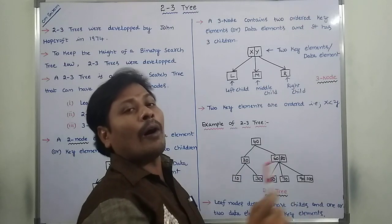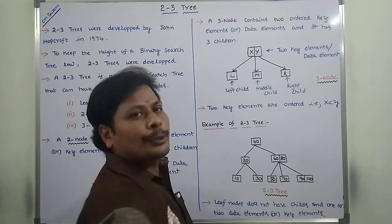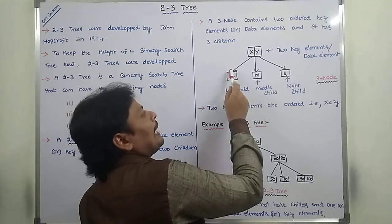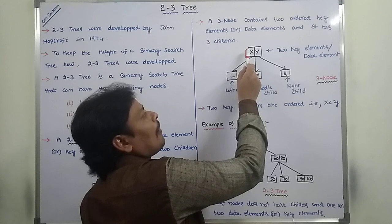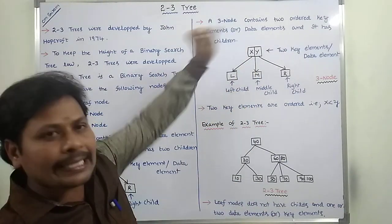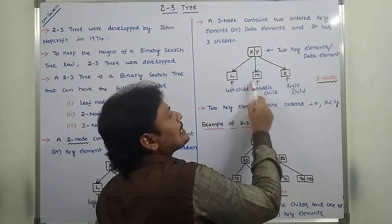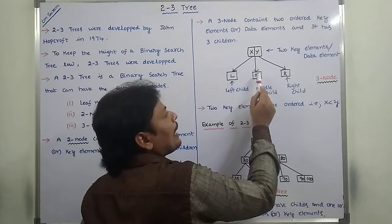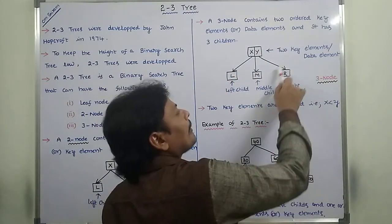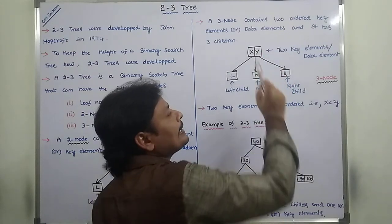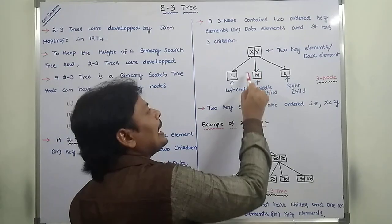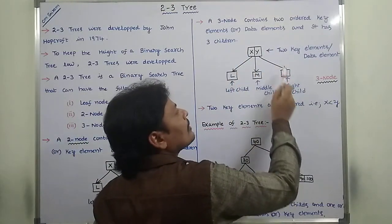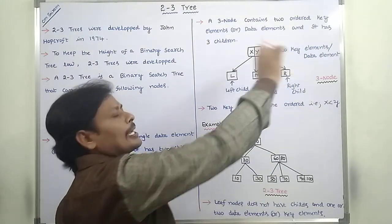The two data key elements are ordered. For example, X and Y are two key elements where X is less than Y. The value of the left child is always less than X. The value of the middle child is always in between X and Y. The value of the right child is always greater than Y. The key elements are always in increasing order, following the Binary Search Tree property.